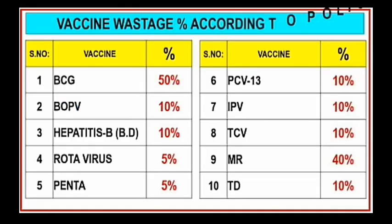Vaccine wastage percentage according to policy: BCG 50%, bOPV 10%, Hepatitis B 10%, Rota 5%, Penta 5%, PCV13 10%, IPV 10%, TCV 10%, MR 40%, and Td 10%.